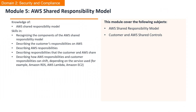Welcome to Module 5, AWS Shared Responsibility Model. In this module, we will delve into the AWS Shared Responsibility Model and cover the following subjects: the components of the AWS Shared Responsibility Model, describing the customer's responsibilities on AWS, describing AWS responsibilities, describing responsibilities that the customer and AWS share, and describing how AWS responsibilities and customer responsibilities can shift depending on the service used, for example, Amazon EC2, Amazon RDS, and more. Let's dive in.